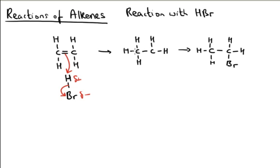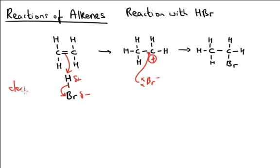Now that creates an intermediate — this is incomplete at the moment — so I have my positive charge there, that's a carbocation. The other product from this reaction was a bromide ion, Br minus. So the Br minus then moves towards the carbon as the negative is attracted to the positive carbon, and that creates the product. So this is an electrophile, this is a bromide ion, and this is a carbocation.